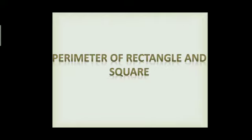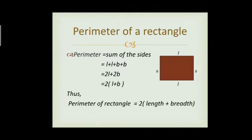Perimeter of rectangle and square. First of all, perimeter of rectangle. What is a rectangle? A closed figure with four sides where opposite sides are equal, with length and breadth.